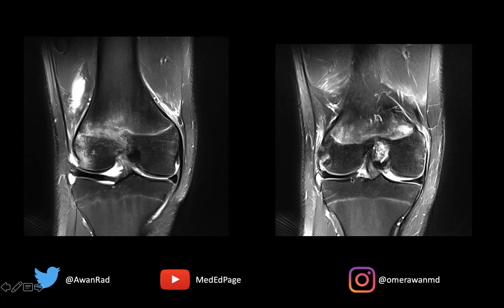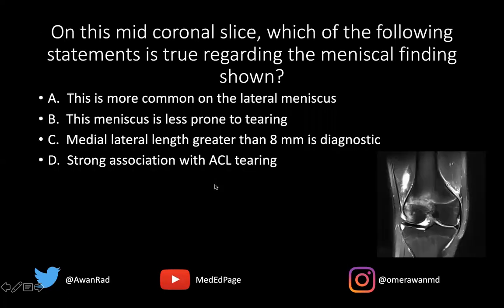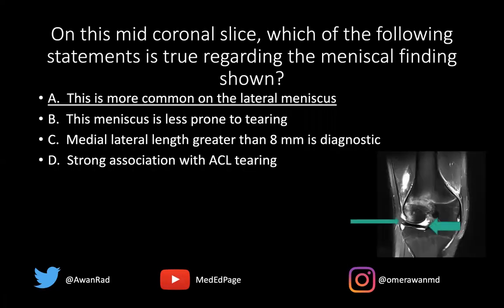This is, in fact, a discoid meniscus. The medial to lateral dimension is too big — there's too much meniscal tissue, and we call that a discoid meniscus. This is more common on the lateral side, making A the correct answer. This meniscus is definitely more prone to tearing, and the medial to lateral length is usually greater than 14 millimeters on the mid-coronal slice — that's what's diagnostic. This has no association with ACL tearing.